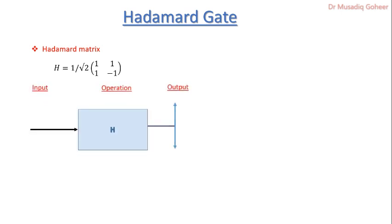This is the block diagram of Hadamard gate in which this part represents the input of the Hadamard gate and this central part is the operation of Hadamard gate. In that part Hadamard matrix is enclosed and this is the output portion of the Hadamard gate.